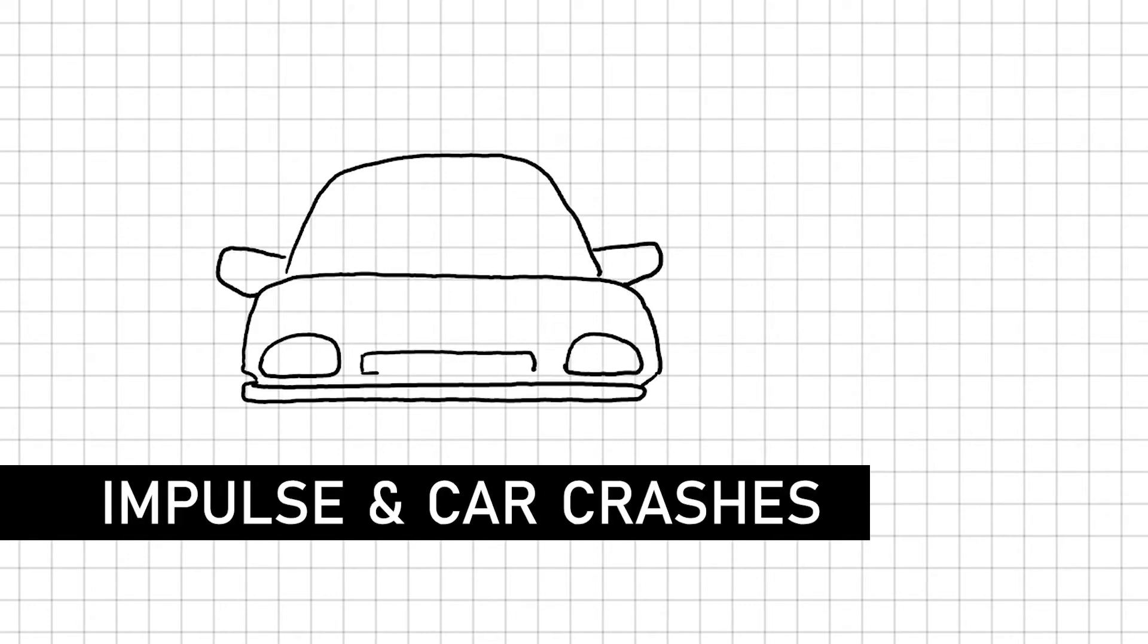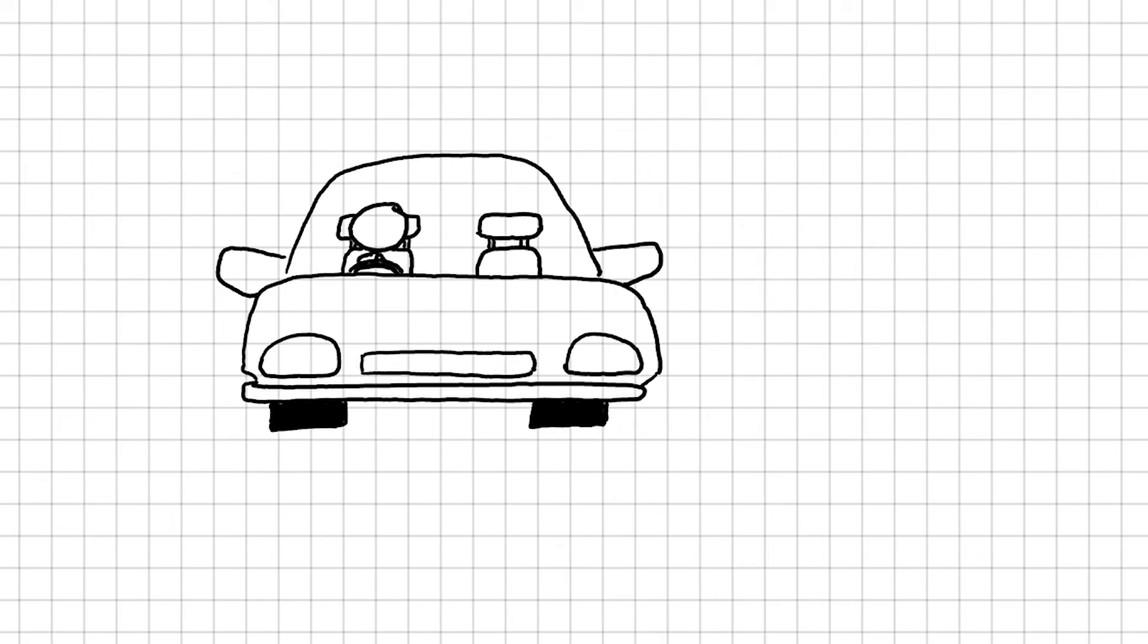Why do we need to wear a seatbelt in a car? Why does the car deploy an airbag during a car crash? Yes, the obvious answer is that these are safety mechanisms to protect us in a car crash. And did you know a car is designed to crumple up to protect us when it crashes? But how?